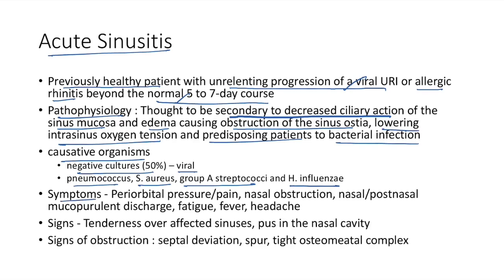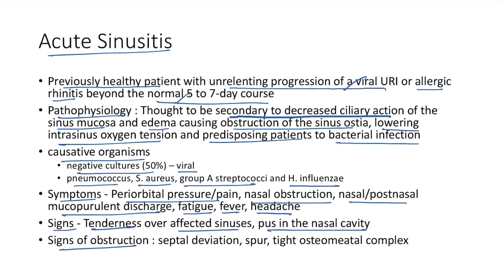Symptoms of acute sinusitis: periorbital pressure or pain, nasal obstruction, nasal or post-nasal mucopurulent discharge, fatigue, fever, and headache. Signs include tenderness over affected sinuses and pus in the nasal cavity, along with signs of obstruction — septal deviation, spur, and tight osteomeatal complex.